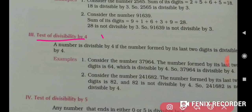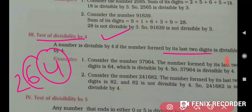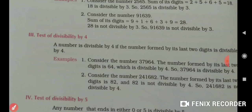Now, how can we check divisibility by 4? You have to check the last two digits — the ones digit and the tens digit together. For example, for the number 37964, check the last two digits: 64. Is 64 divisible by 4? Yes. If the last two digits form a number divisible by 4, then the whole number is divisible by 4.